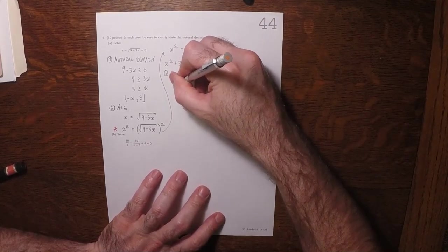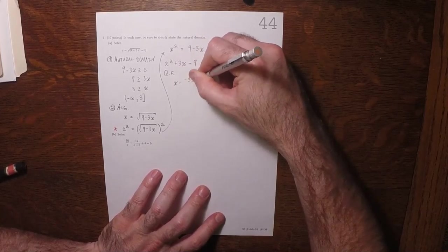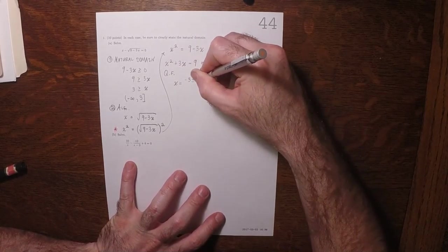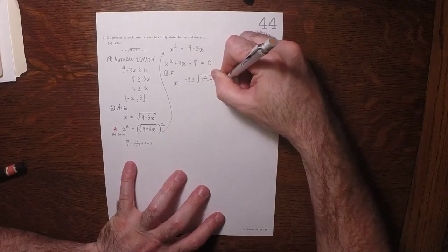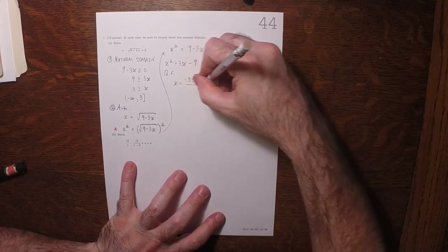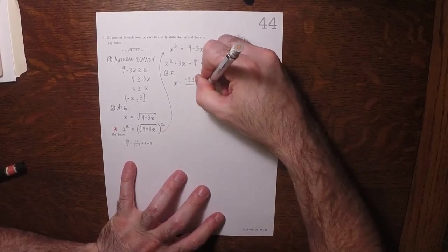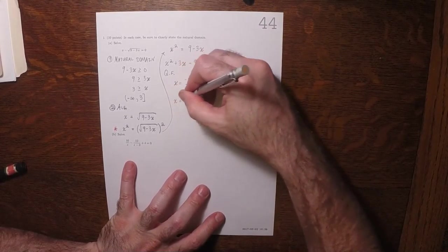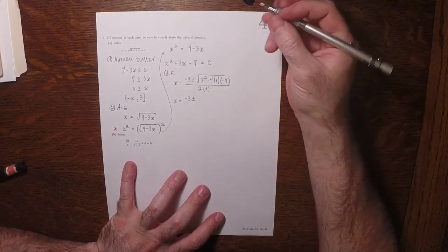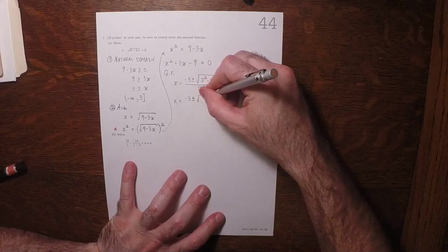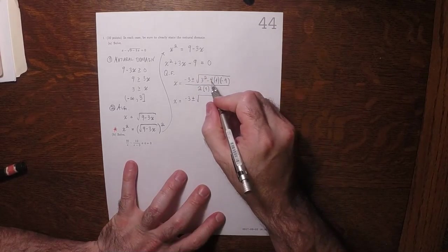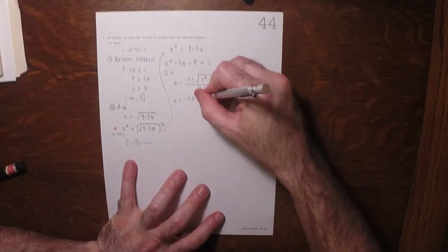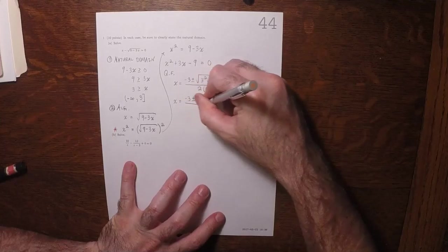So x is negative 3 plus or minus the square root of 3 squared minus 4 times 1 times negative 9, and all of this divided by 2a, so 2 times 1. Negative 3 plus or minus the square root of, well, those negatives will cancel and we'll get addition.